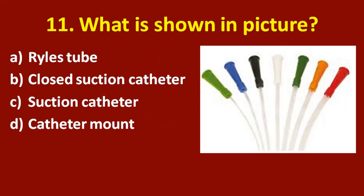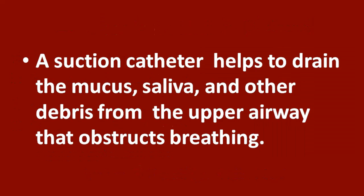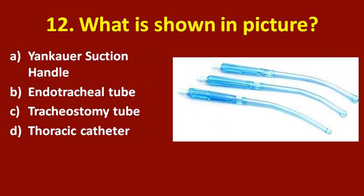Next question: what is shown in the picture? Option A: Ryle's tube. Option B: closed suction catheter. Option C: suction catheter. Option D: catheter mount. The correct answer is option C, suction catheter. A suction catheter helps to drain mucus, saliva, and other debris from the upper airways that obstruct breathing.